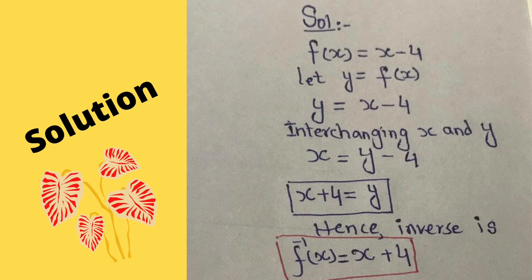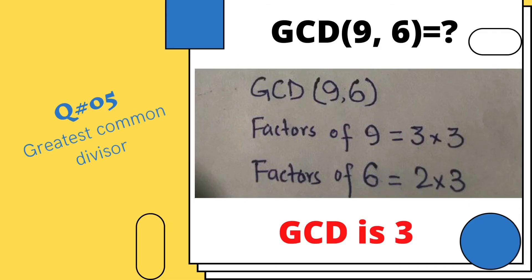The next question was GCD of 9 and 6. You can find the factors of 9 and the factors of 6. If they give other values, you can find the factors and then find which values are common. You select those and multiply them. Here, only 3 is common, so the greatest common divisor is 3.